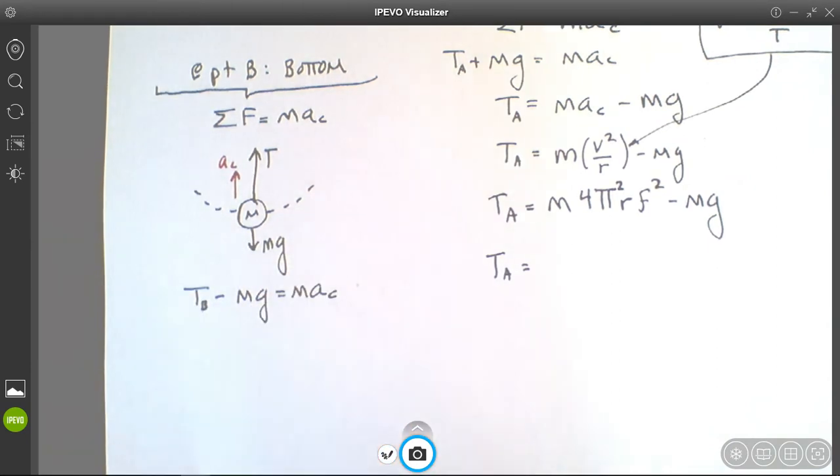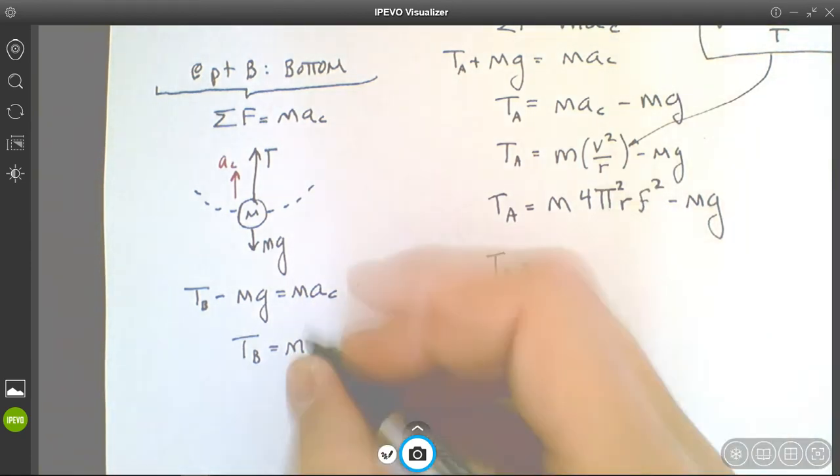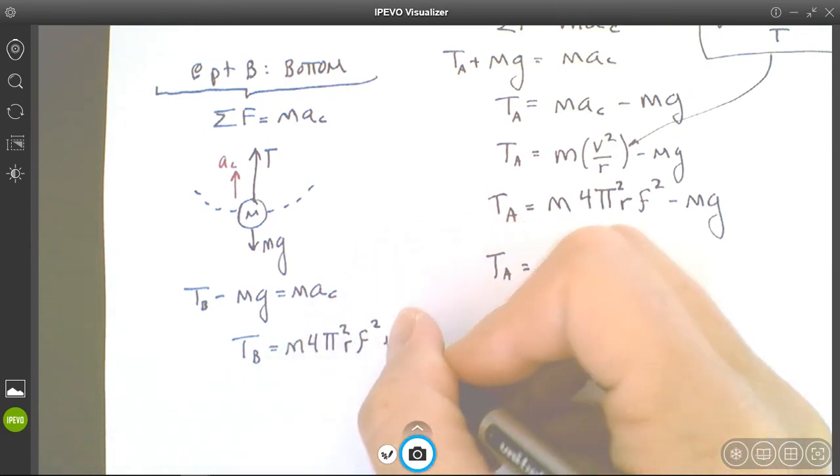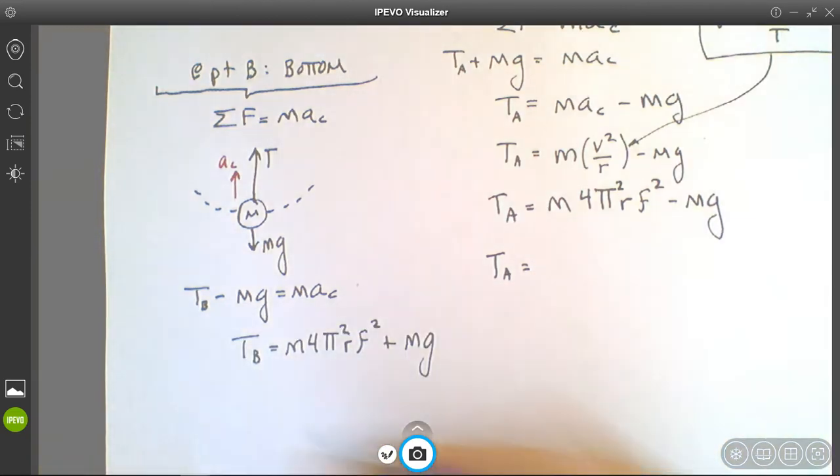This is tension at B, so tension at B equals m... Now, centripetal acceleration I could write v squared over r, but what I'm going to write is the 4π²rf² add the mg, because it's minus mg, and there's our solution.